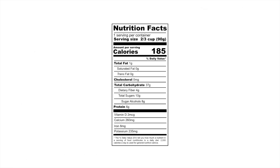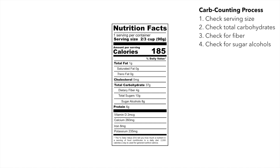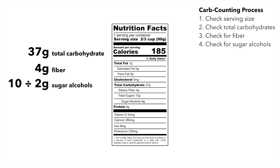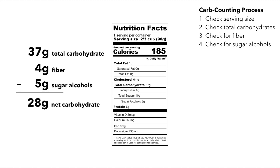So let's try it. Remember the carb counting process: there are 37 grams of total carbohydrates, minus 4 grams of fiber, minus 10 divided by 2, or 5 grams of sugar alcohols, comes to 28 grams. The number after you have subtracted the fiber and one half of the sugar alcohols is called the net carbohydrate. This is the number that you use when dosing for insulin.